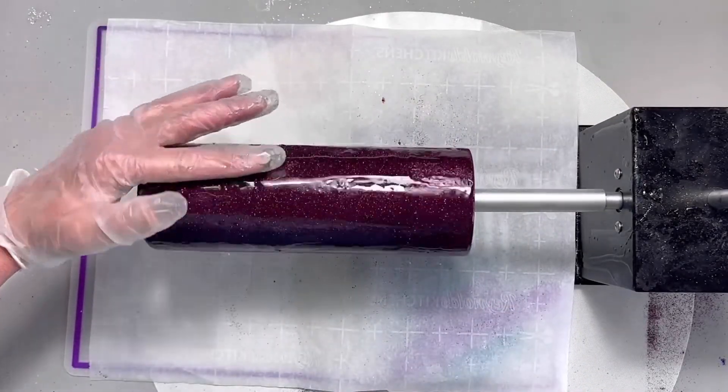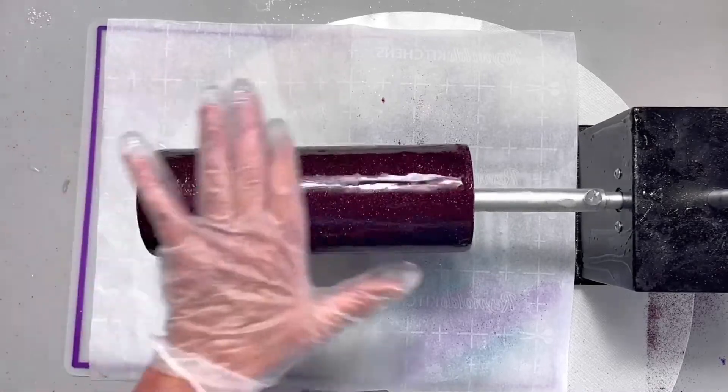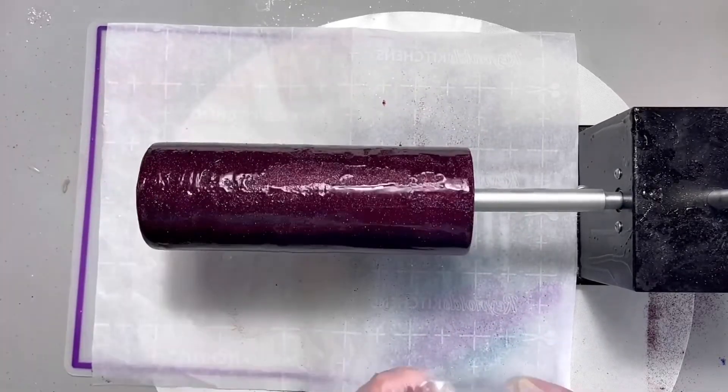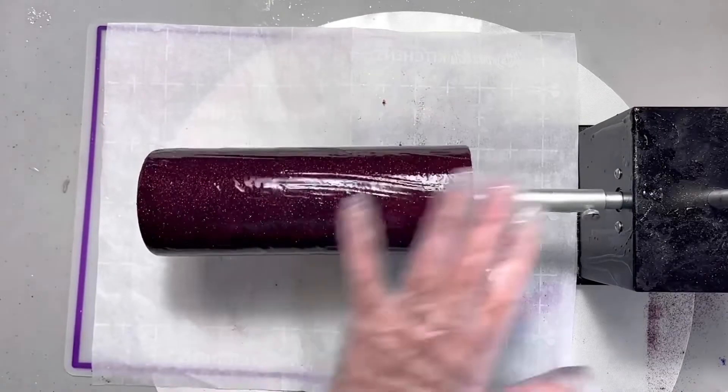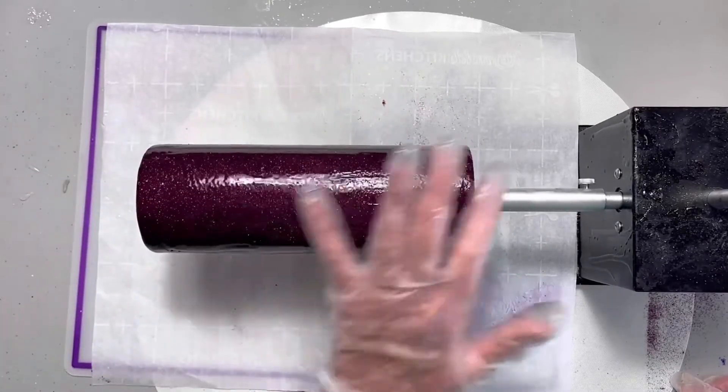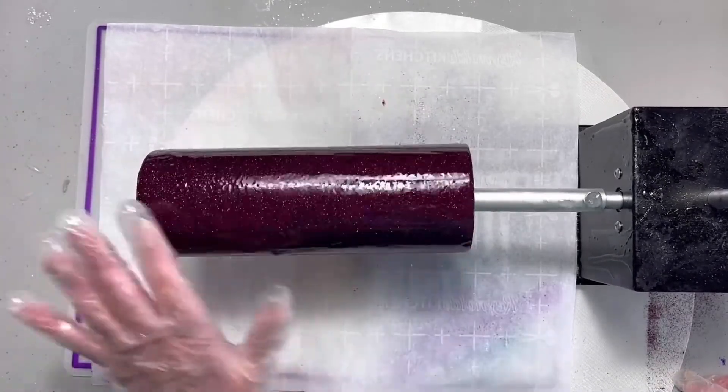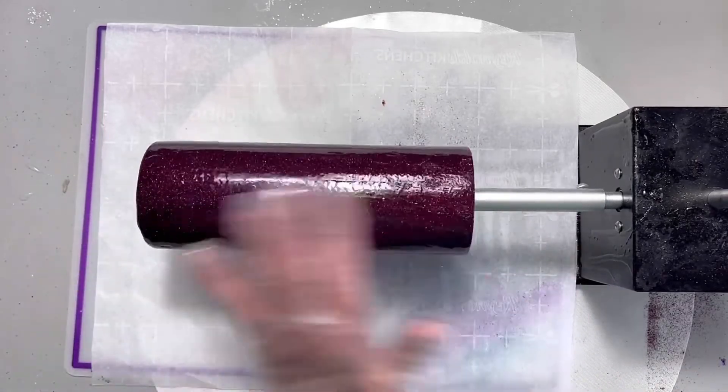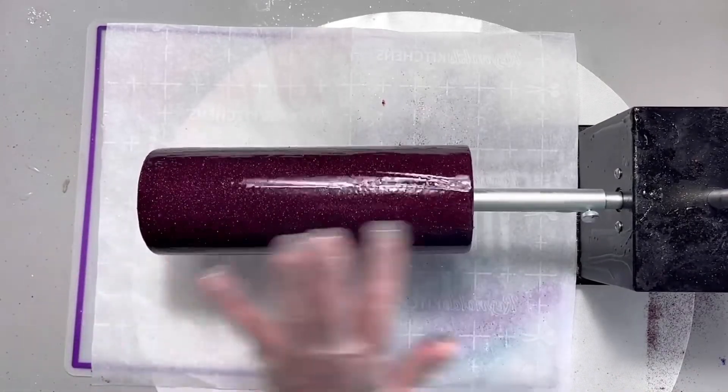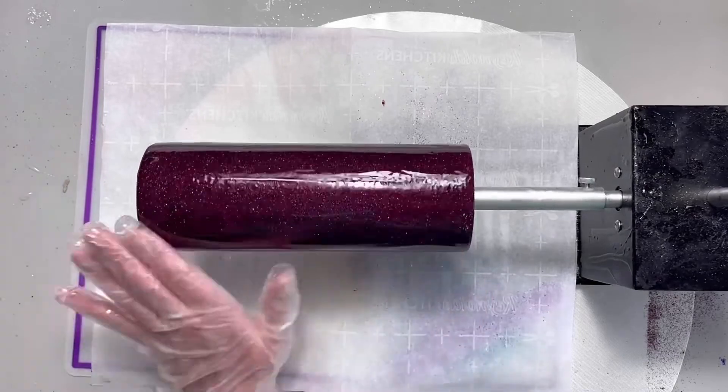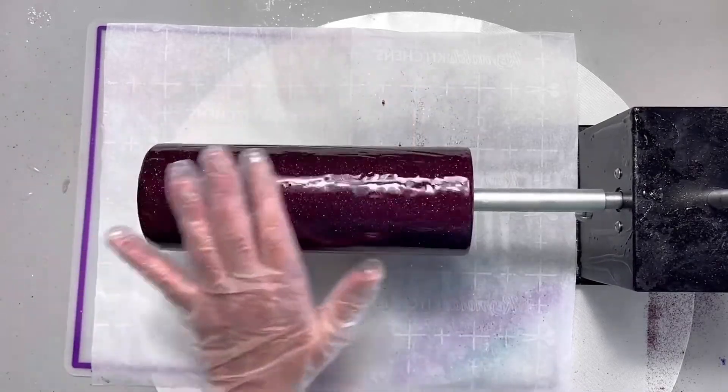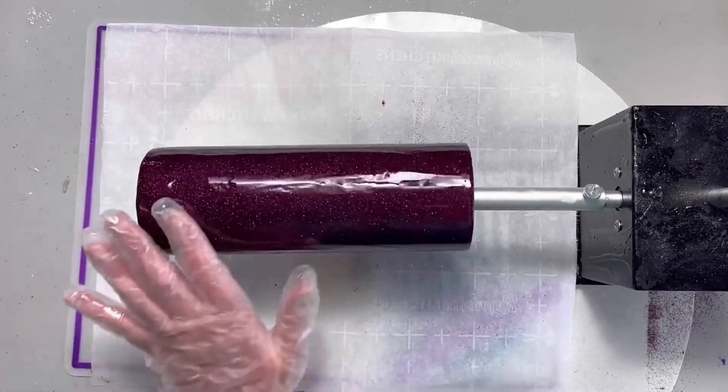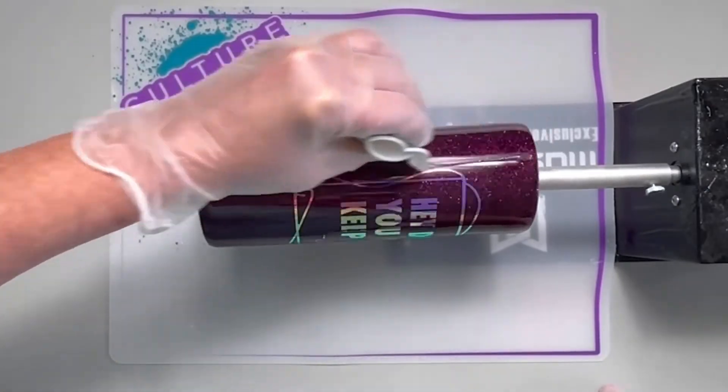I know I put my resin on weird. I don't worry about how it goes on. The only thing you need to worry about is getting a nice even coat, getting it spread all over your cup. Pay special attention to that rim and to the bottom edge. You don't want to get that bottom edge gloppy. You want to be careful of that.